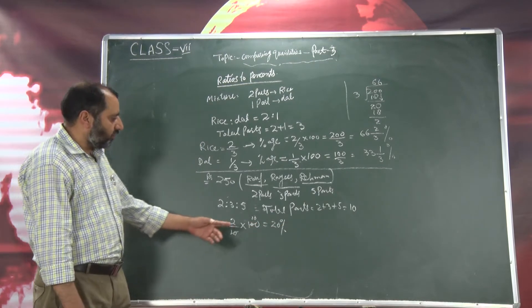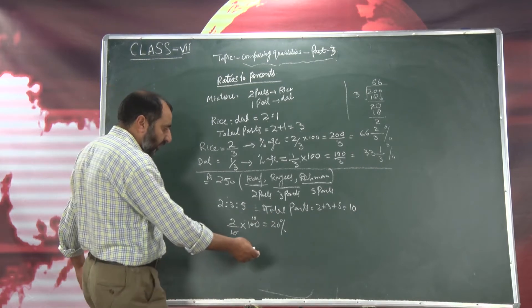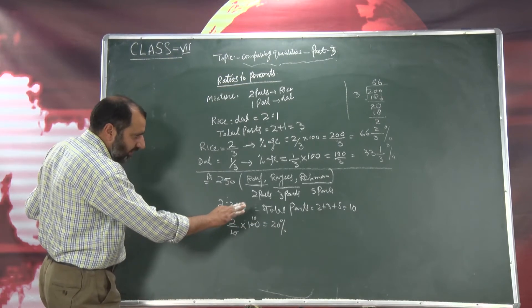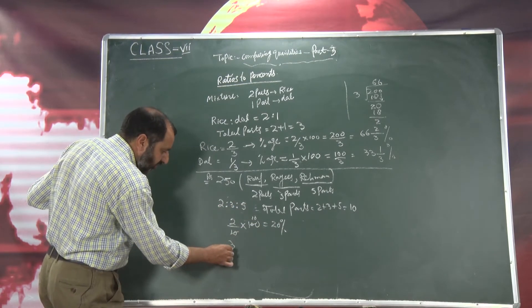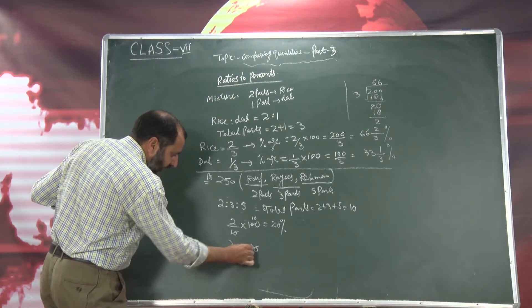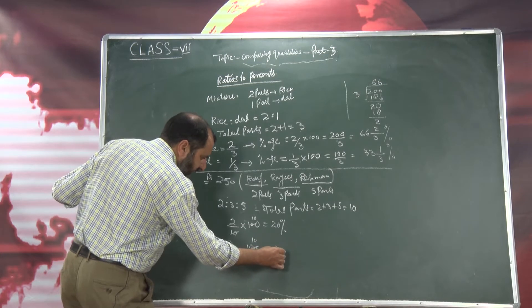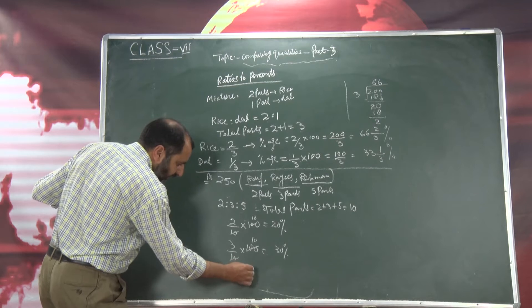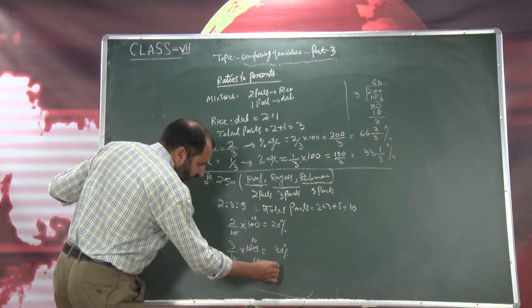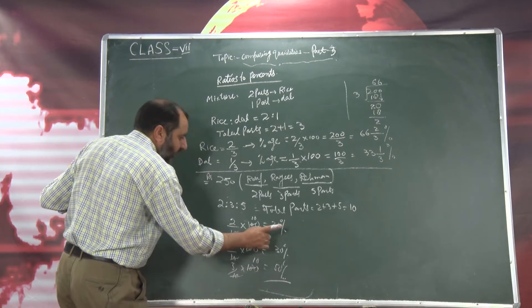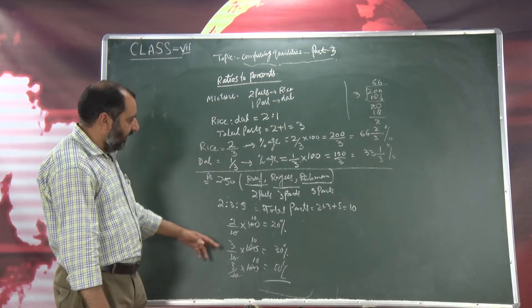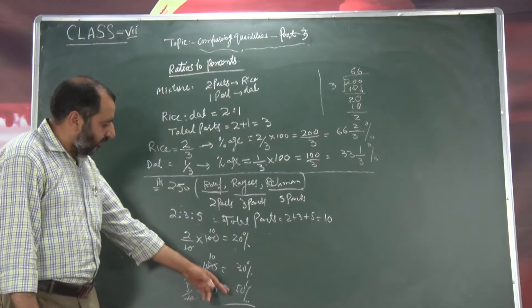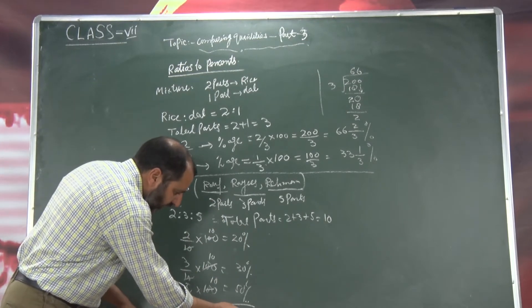So 20 percent. We have ratio 3 divided by 10 into 100 — 10 tens are 100, 3 tens are 30. Now this is 5 parts — 5 divided by 10 into 100 — 10 tens are 100, 5 tens are 50. So — 20 percent Roof ne liya hai, Rais ne liya hai 30 percent, Rahman ne liya hai 50 percent. Jab hum inka add karingi — 50 plus 30 plus 20 — that is also equal to 100 percent.